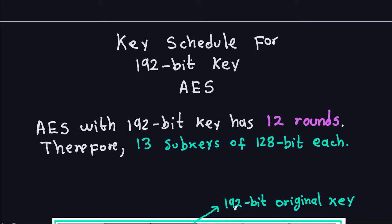Hello and welcome again. Last time we talked about the key schedule for the 128-bit key. Remember that the Advanced Encryption Standard has three possible key lengths, so we need to talk about the 192-bit key length. The key schedule for the 192-bit key for the Advanced Encryption Standard is quite similar to the schedule for the 128-bit key.